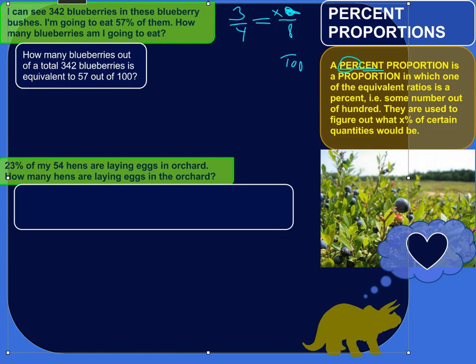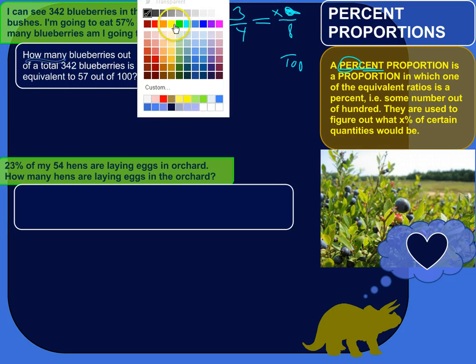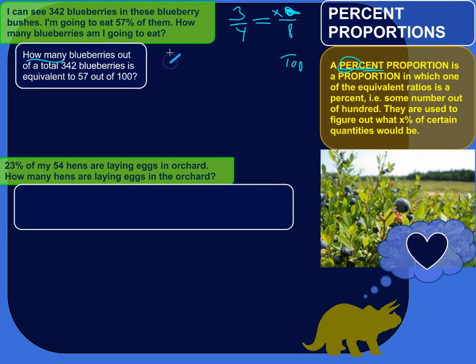So let's write that in the language of math. So how many would just be x. We don't know how many. That's an unknown quantity so far. How many out of a total of 342. So right here we have, how many out of 342 is equivalent to 57 out of 100?